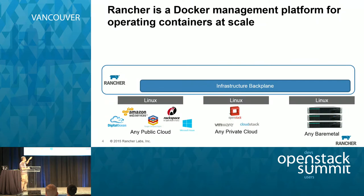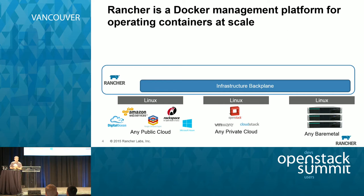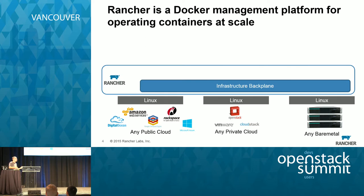Rancher has two parts. One is what we call the infrastructure backplane. Docker is a completely consistent and portable application packaging, distribution format, and runtime environment. But the problem is, as you run Docker on different types of backend, you see many different kinds of infrastructure. On Amazon you see EBS, ELB, security groups, and VPC. On OpenStack you'd see something quite different — the Neutron adapter, OpenStack's notion of virtual networks, load balancer as a service, and other OpenStack security concepts.